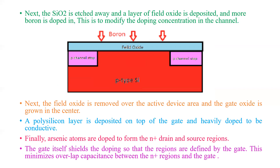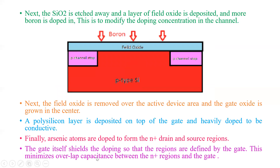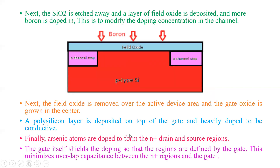The important thing is that the gate shields the doping. When we dope with arsenic, the gate prevents the doping from spreading into the channel region — the doping is confined up to the gate edge itself. This minimizes the overlap capacitance between the N+ regions and the gate. If the N+ region were to extend under the gate, there would be an overlapping capacitance between the gate and the N+ region, which must be avoided.